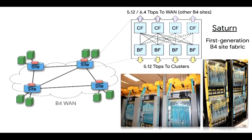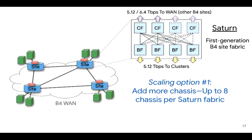This figure shows the first-generation B4 site fabric, called Satin. It has two layers of chassis: at the bottom layer, we have four BF chassis that connect to clusters, while at the top level we have two to four CF chassis that talk to the WAN. How do we scale this network? One option is to add two more CFs at the top level, making eight chassis total for more WAN capacity. However, this has its own limits, and over time we see it is way below our scaling requirements.